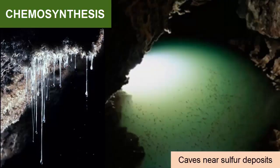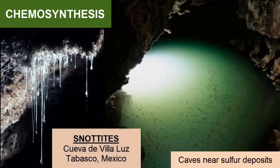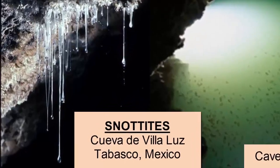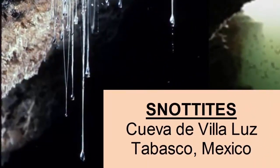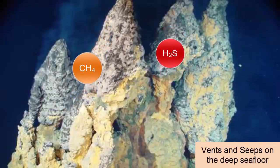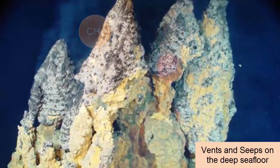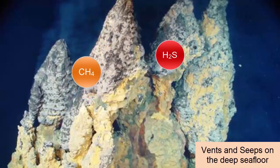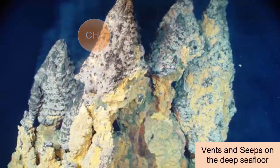Sulfuric acid is one of the toxic byproducts, and these bacteria live in highly acidic, mucus-rich mats attached to the cave walls. These mats are called snotites. This example is from Cueva de Villaluz in Tabasco, Mexico. These snotites have acid drops at their tips with a pH of zero. In hydrothermal vents and hydrocarbon seeps on the bottom of the seafloor, bacteria capture energy from hydrogen sulfide or methane gases and use that energy to synthesize sugar. These bacteria provide the base of an exotic and diverse food web.